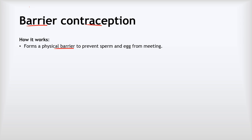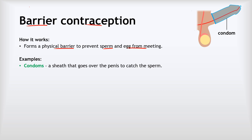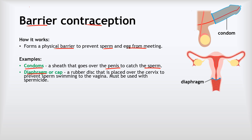Barrier contraception works by forming a physical barrier to prevent the sperm and the egg from meeting. There are three main kinds. First, male condoms: a sheath normally made of thin nitrile rubber that goes over the penis and catches the sperm when ejaculated, preventing them from ever making direct contact with the female body. The second is the diaphragm, or cap — a rubber disc placed over the cervix to prevent sperm from swimming into the uterus. It is also coated with spermicide to help kill any sperm cells that hit it.